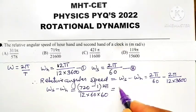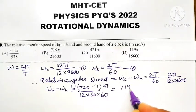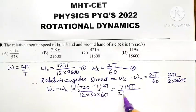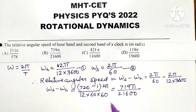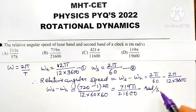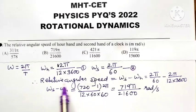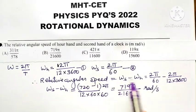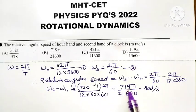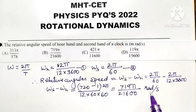This becomes equal to 719π divided by, if you multiply this, it is 21600. The unit is radian per second. So the relative angular speed of hour hand with second hand is 719π divided by 21600 radian per second.